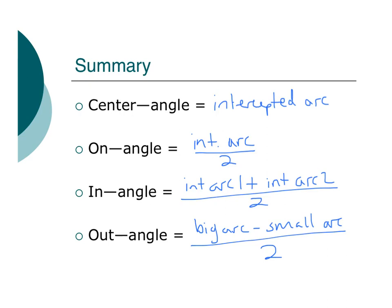Here's a quick summary of all of our formulas. We have our central angle that's equal to the intercepted arc. We know that. An on angle is half of the intercepted arc. An in angle, you add the two angles together and you divide it by 2. That's the one that looks like this. And there's my center.